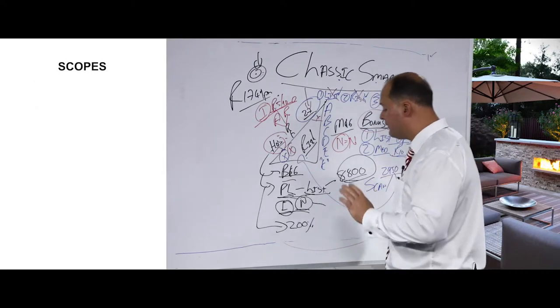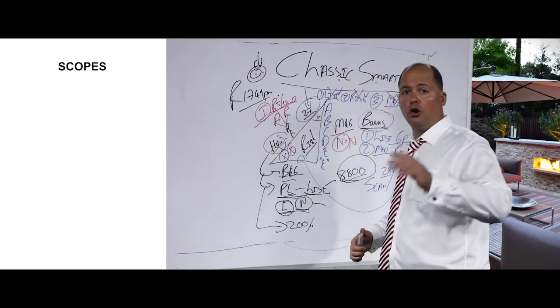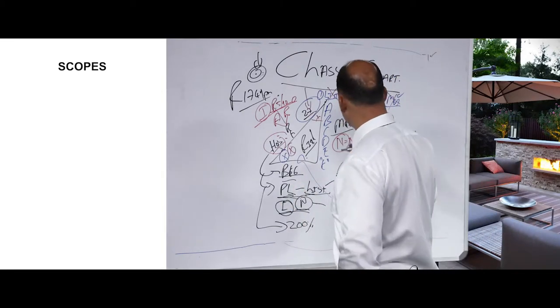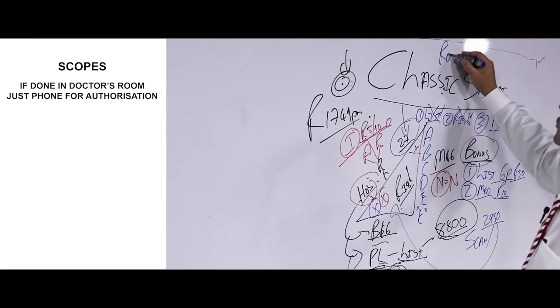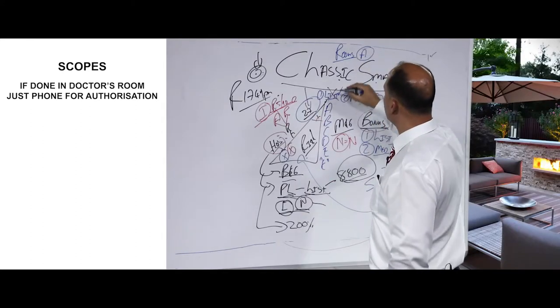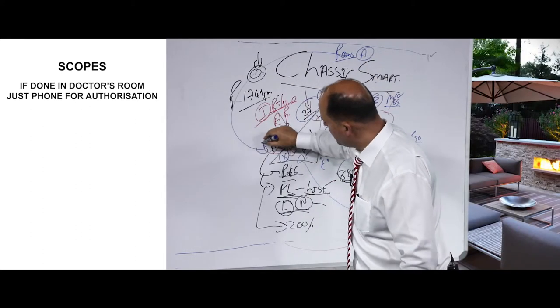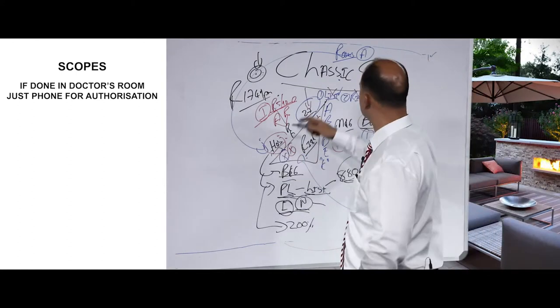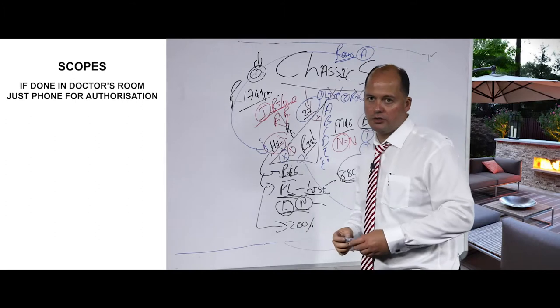If you need to go for scopes, colonoscopy, gastroscopy, if it's done in the doctor's rooms, they just need to phone for authorization, and the whole thing will be paid from the hospital benefit. The whole scope amount will be paid from the hospital benefit, although it is done in the doctor's rooms.